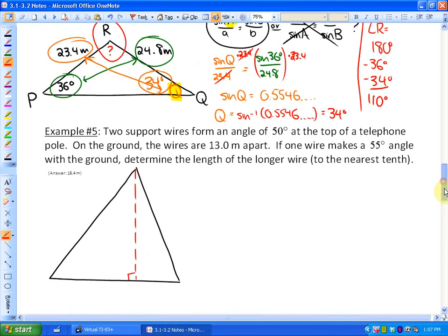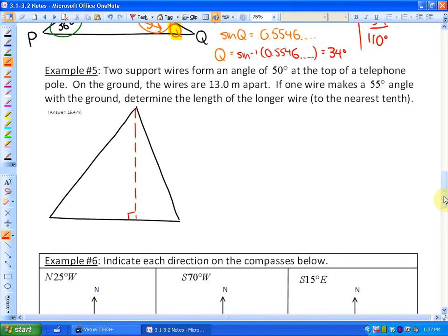Let's look at one more problem. This question says two support wires form an angle of 50 degrees at the top of a telephone pole. On the ground, the wires are 13 meters apart. If one wire makes a 55 degree angle with the ground, determine the length of the longer wire to the nearest tenth.